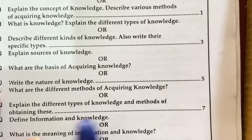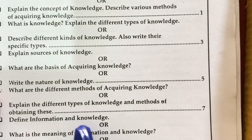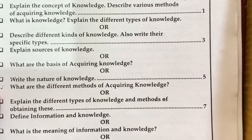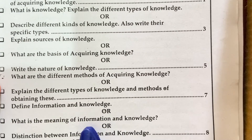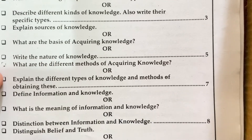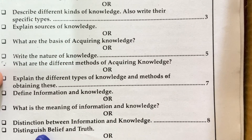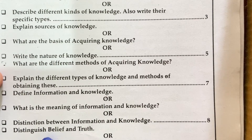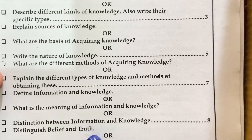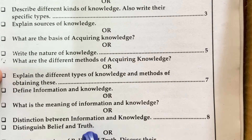Explain the different types of knowledge and methods of obtaining them. Define information and knowledge — what is the meaning of information and knowledge? Distinguish between information and knowledge.